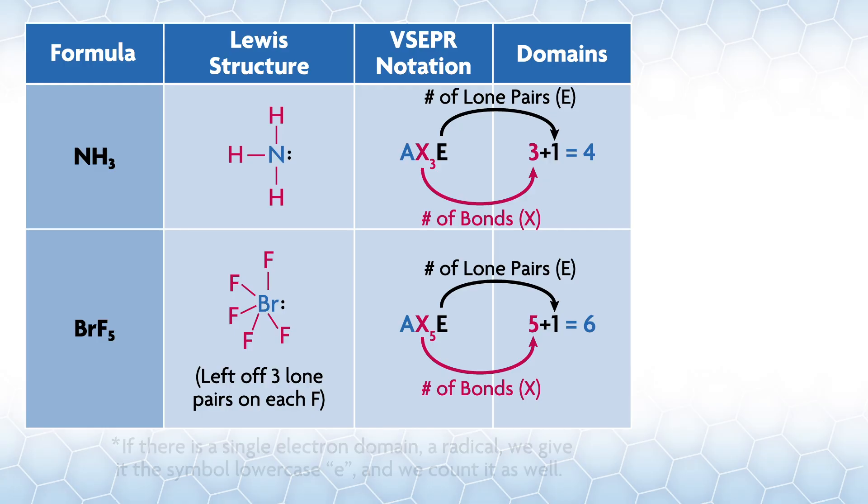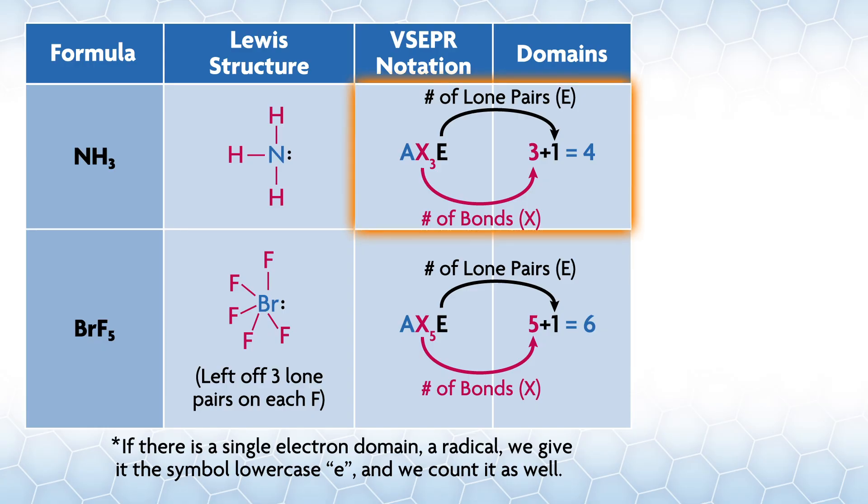For BrF5 we have one lone pair and five X groups (fluorines), so the notation is AX5E. Next we determine the number of electron domains - you simply add the number of lone pairs and bonds. If there is a single electron domain (a radical) we give it the symbol lowercase e and we count it as well.